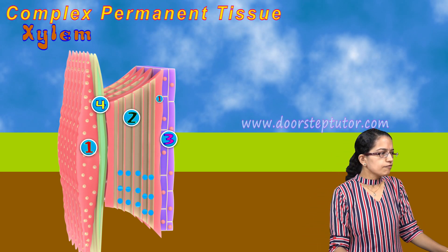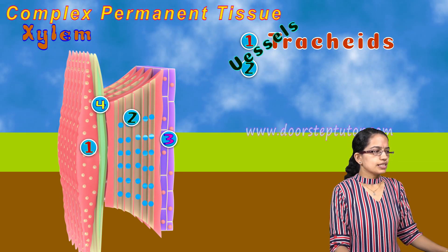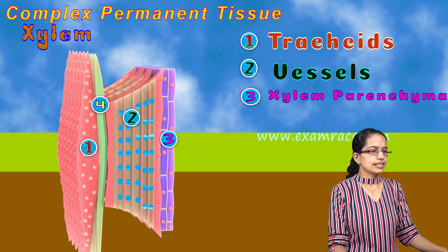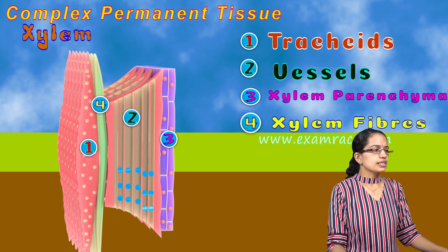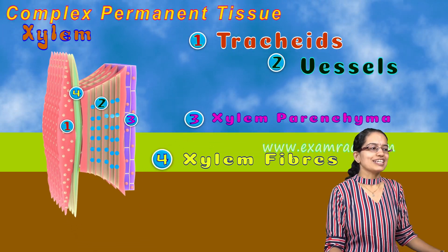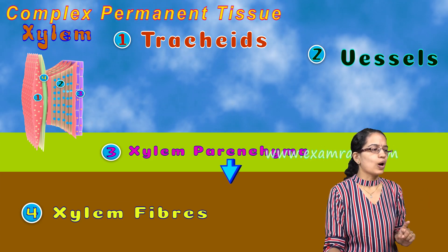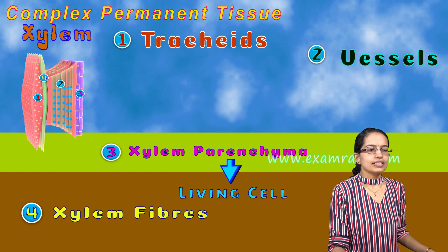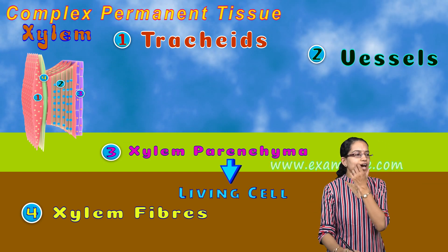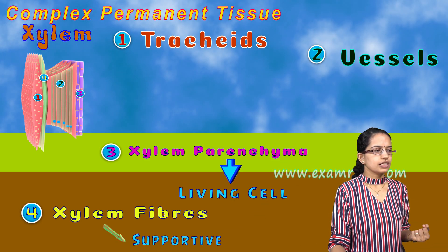Xylem has four components: the first is tracheids, the second is vessels, the third is xylem parenchyma, and the fourth is xylem fiber. Of these, only xylem parenchyma is living — the rest are non-living. Xylem fiber, as the name suggests, is fibrous and its function is supportive in nature.